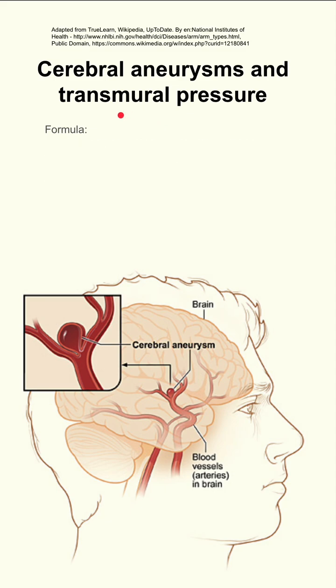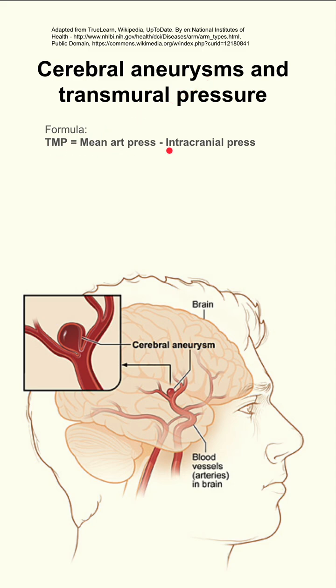This is transmural pressure and how it affects cerebral aneurysms. There's a formula to start: your transmural pressure, TMP, is your mean arterial pressure minus your intracranial pressure.